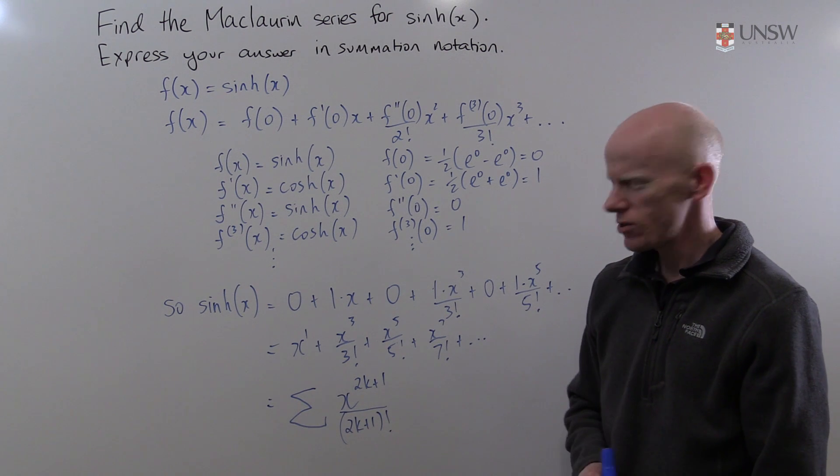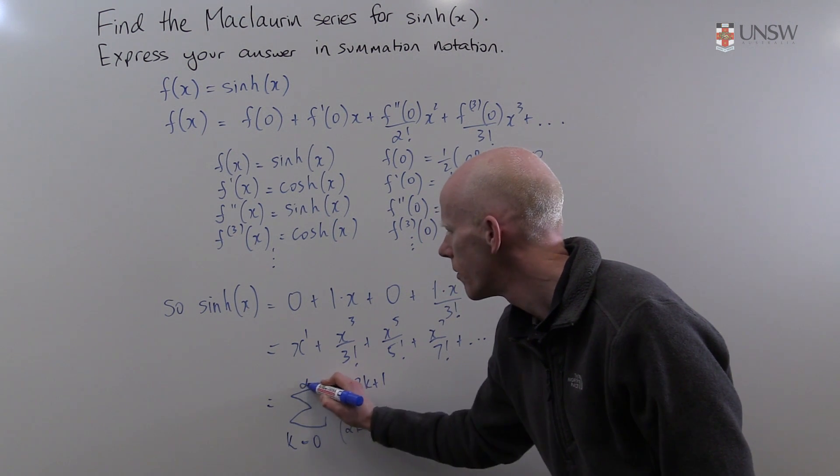I've divided each of my powers of x by the index factorial, so I have (2k+1) factorial. And now all that remains is to figure out where I start. The first power of x here is 1, so I need to start my summation with a value of k that gives me the power of 1. If k is 0, 2 times 0 plus 1 is 1. So I'm going to start my infinite series from k equals 0.